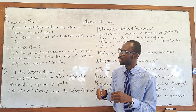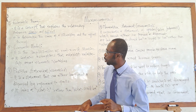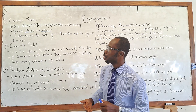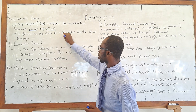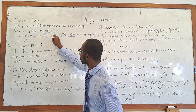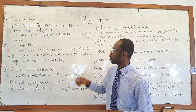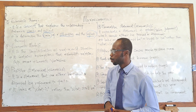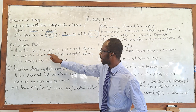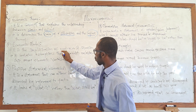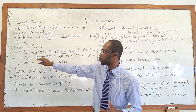In the previous lecture, I told you that economic theory is a statement that focuses on how things should be — that is the normative aspect of economics. And then we also looked at economic model. We said that economic model is a simplification of a real-world situation.